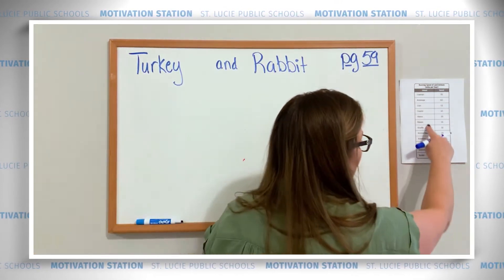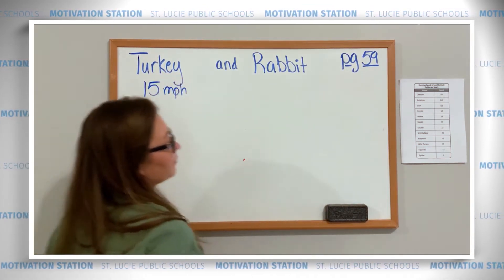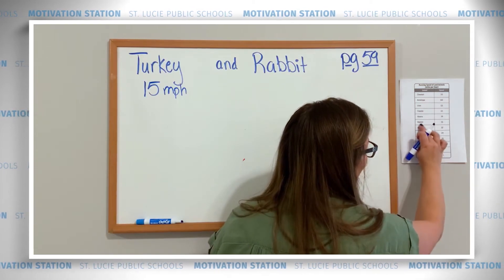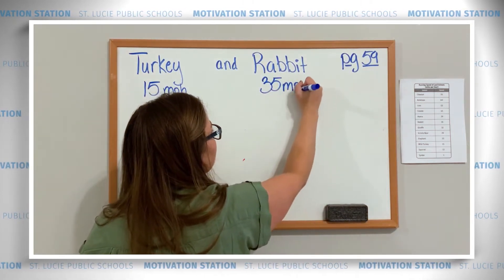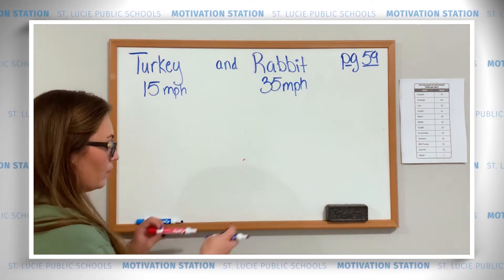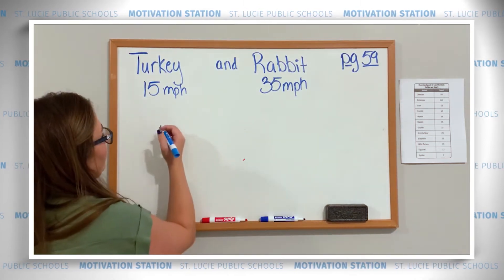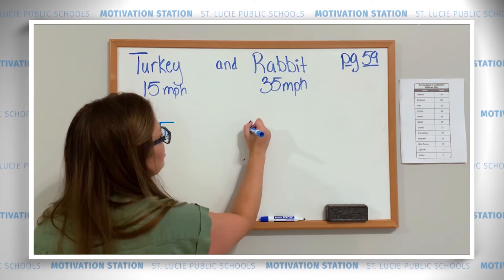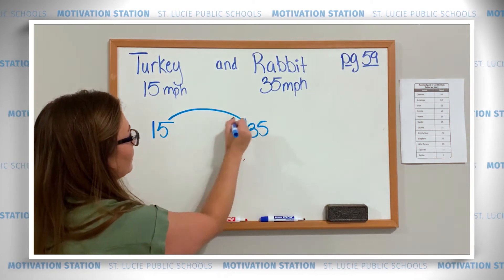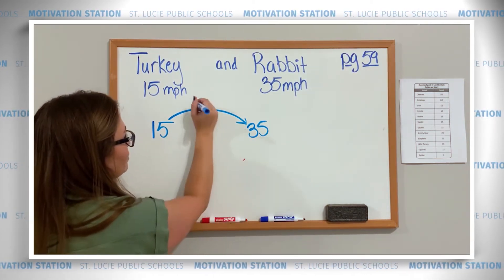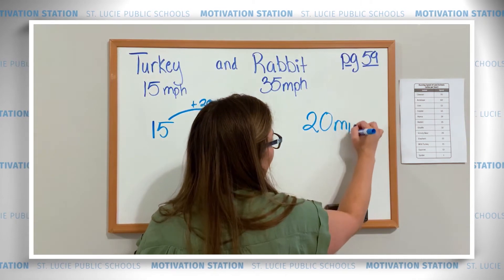The wild turkey goes 15 miles per hour and the rabbit goes 35 miles per hour. Again, we need to find the difference between them. We can do addition or subtraction — let's start with addition. I start at 15 and I'm going to 35. This is an easy jump because 15 to 35 both end in five, so I can do it in one jump of plus 20. The difference is 20 miles per hour.